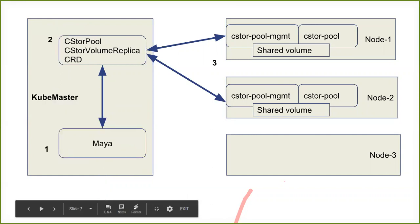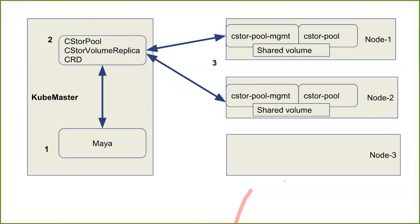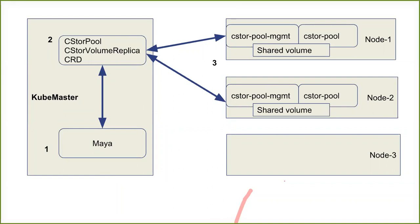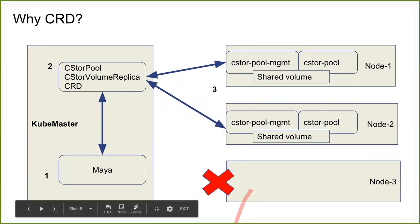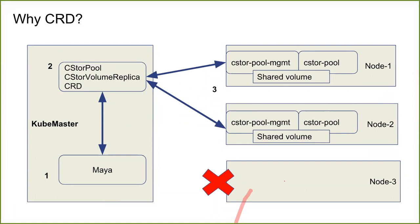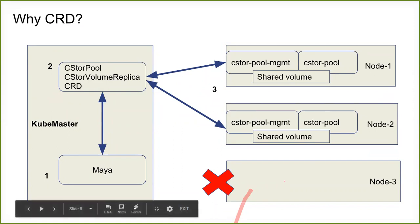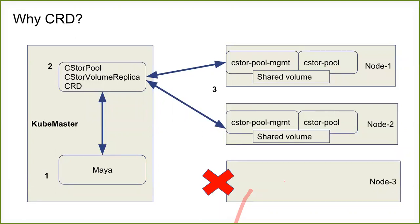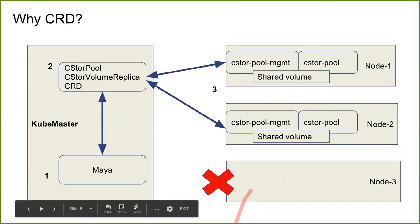To summarize the flow: number one, Maya creates the custom resource; number two, the custom resource exists in Kubernetes; number three, my application watches it and performs disk operations. The reason for this design is that we have multiple nodes and Maya doesn't know if a node is up or not. Someone needs to push an event so that whenever a node comes up we can perform the operation — we cannot ping it continuously, that would be an improper design.